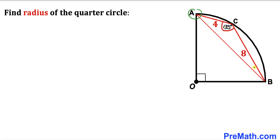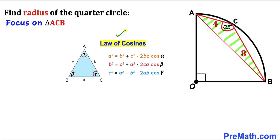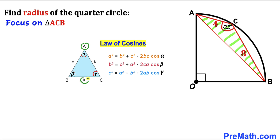I have connected points A and B, giving us triangle ACB. Let's apply the law of cosines to triangle ACB, where alpha is the angle at vertex A, beta at vertex B, and gamma at vertex C. The side opposite vertex C is lowercase c, opposite A is lowercase a, and opposite B is lowercase b. The formula is: c² = a² + b² − 2ab·cos(gamma).